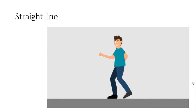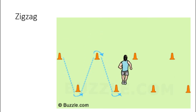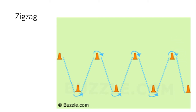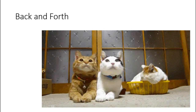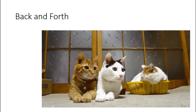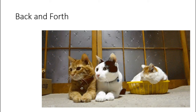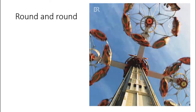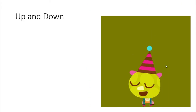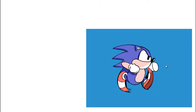Objects can move in many ways. Look at this way of moving — in a straight line. How about zigzag? How about back and forth? Like when you are on a swing, you go back and forth. Another kind of movement is round and round. There are more kinds of movement, like up and down or in a curved line.